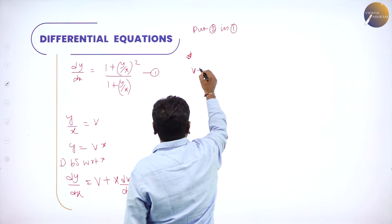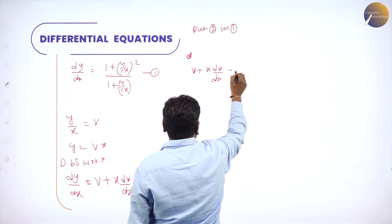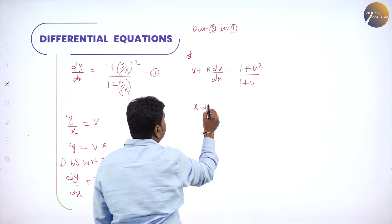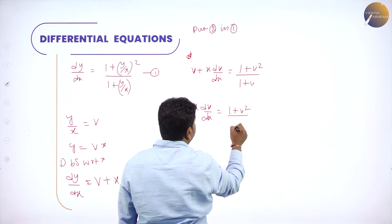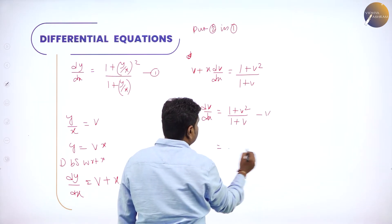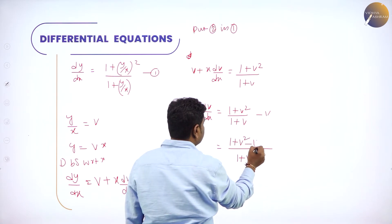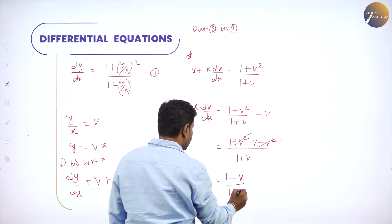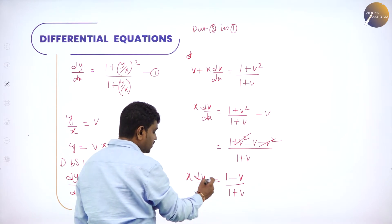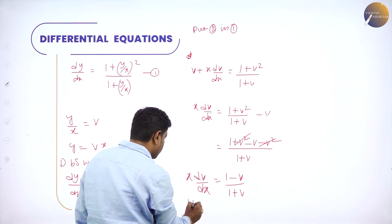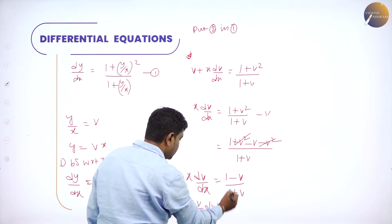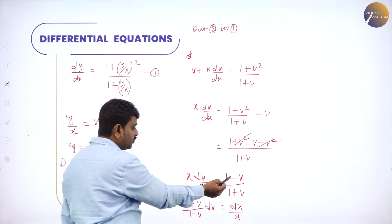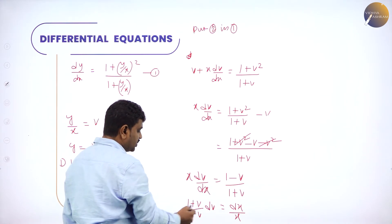So x·dv/dx = (1 + v²)/(1 + v) − v. Taking LCM gives (1 + v): numerator becomes 1 + v² − v − v². The v² terms cancel, giving (1 − v)/(1 + v). So x·dv/dx = (1 − v)/(1 + v). Now do separation of variables: (1 + v)/(1 − v) dv = dx/x.